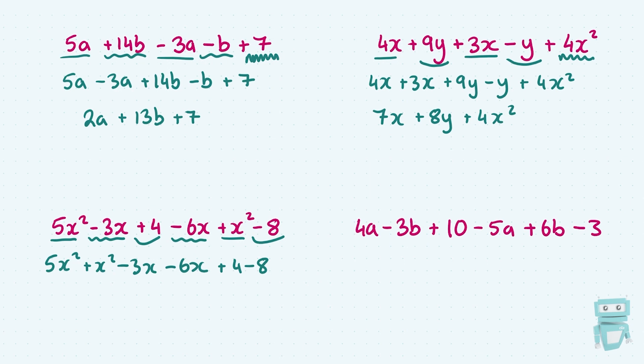And now we can tidy up. I have 5x squared plus x squared, which gives me 6x squared. I have minus 3x minus 6x, which is going to give me minus 9x. And then I have plus 4, take away 8, which is minus 4. And that's the job done here. We get 6x squared minus 9x minus 4. We can't tidy up any further.